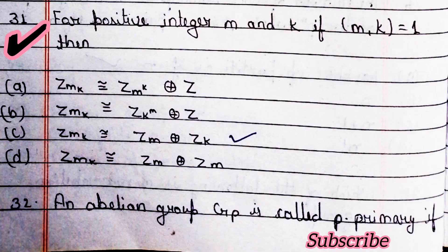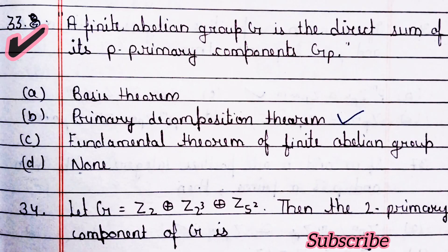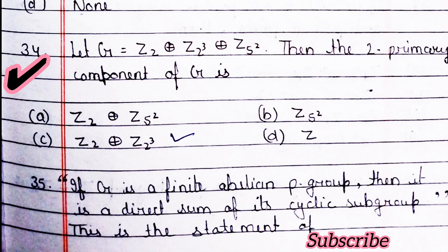Next question: which of the following is an abelian group — option A is right, A3. Next question: which of the following is not a cyclic group — option A is right. For positive integers m and k, if mk equals 1 then — option C is right. An abelian group Gp is called p-primary if — option B is right.